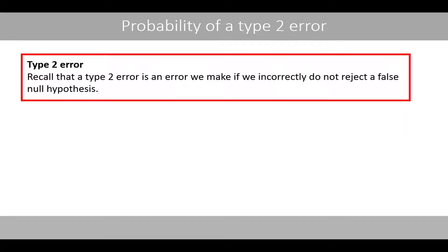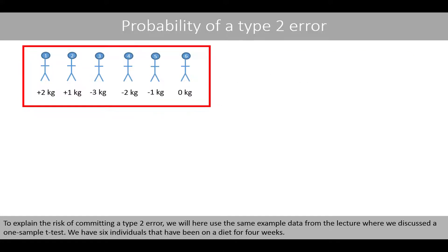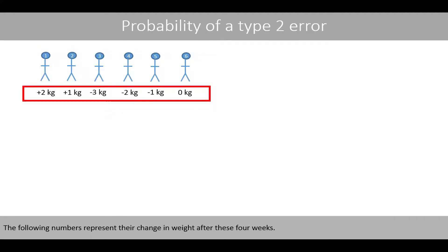Recall that the type 2 error is an error we make if we incorrectly do not reject a false null hypothesis. To explain the risk of committing a type 2 error, we'll use the same example data from the lecture where we discussed a one-sample t-test. We have six individuals that have been on a diet for four weeks, and the following numbers represent the weight change after these four weeks.